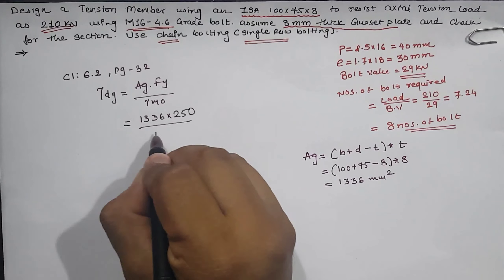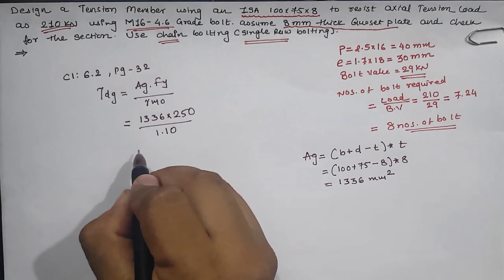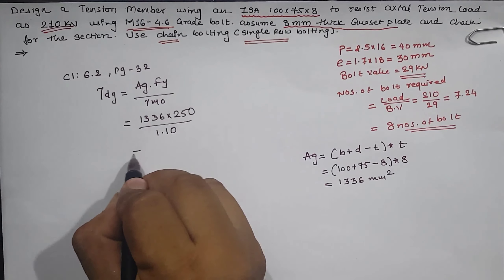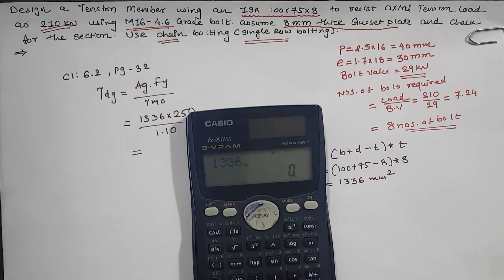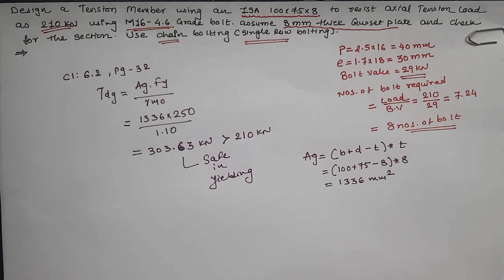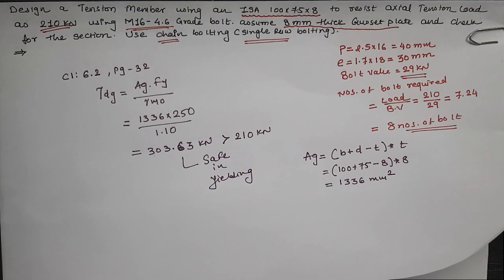The result is Tdg = 303.63 kN, which is greater than 210 kN as the design load. The section is safe in yielding. Our design is safe according to the yielding criteria. Now let us proceed to the rupture criteria.